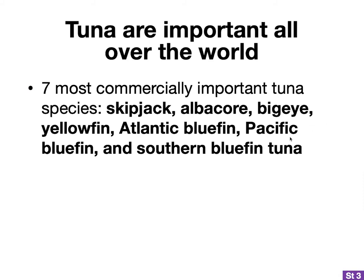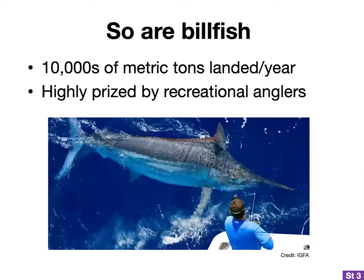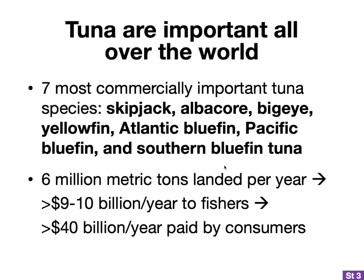Tuna are really important pretty much the entire world over. Taken together, the seven most commercially important tuna species make up the most economically valuable fishery in the world. These seven species inhabit the entire ocean and support both artisanal and industrial fishing wherever they exist. In total, almost six million metric tons of tuna are landed each year, with an estimated dock value paid to fishermen of typically nine to ten billion US dollars per year, and an estimated amount paid by final consumers of upwards of $40 billion a year.